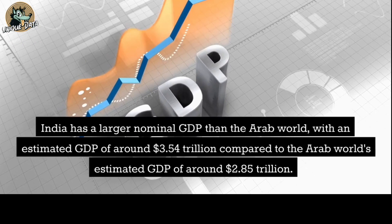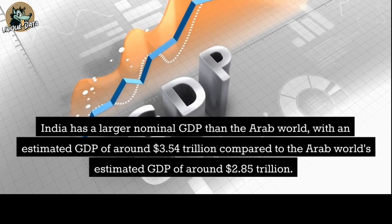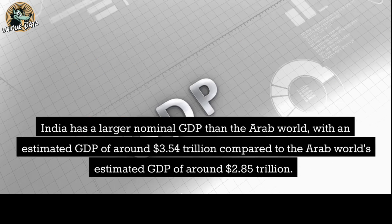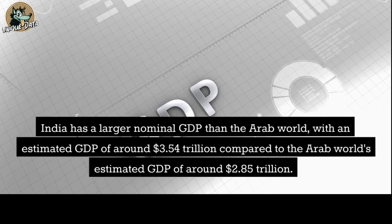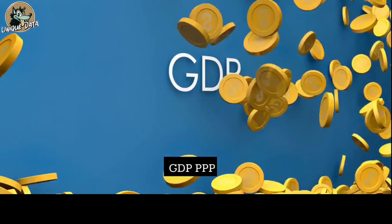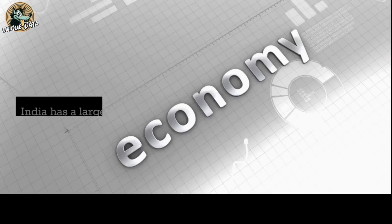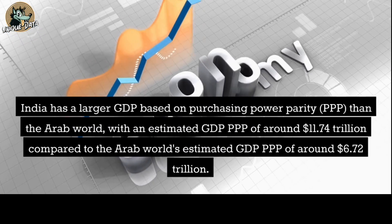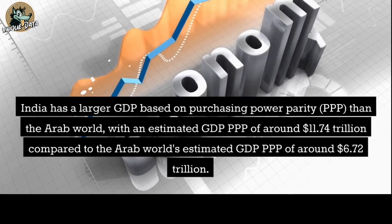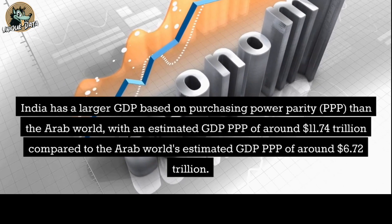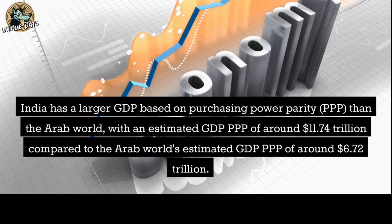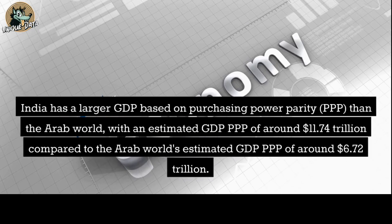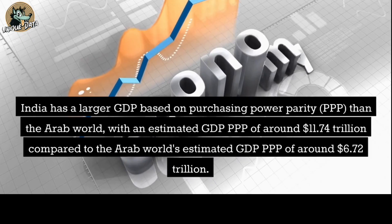GDP nominal: India has a larger nominal GDP than the Arab world, with an estimated GDP of around 3.54 trillion dollars compared to the Arab world's estimated GDP of around 2.85 trillion dollars. GDP PPP: India also has a larger GDP based on purchasing power parity than the Arab world, with an estimated GDP PPP of around 11.74 trillion dollars.